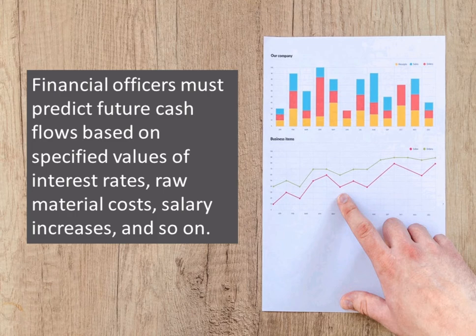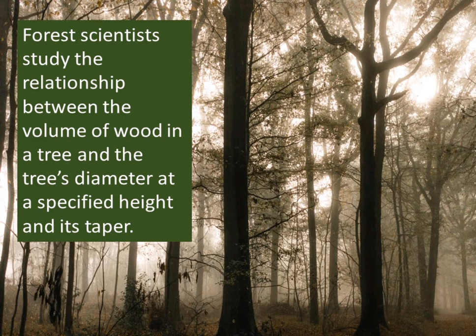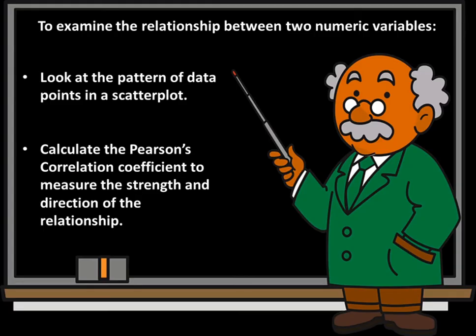For example, financial officers must predict future cash flows based on specified values of interest rates, raw material costs, salary increases, and so on. Forest scientists study the relationship between the volume of wood in a tree and the tree's diameter at a specified height in its taper. To examine the relationship between two numeric variables, look at the pattern of data points in a scatterplot. Calculate the correlation to measure the strength and direction of the relationship.